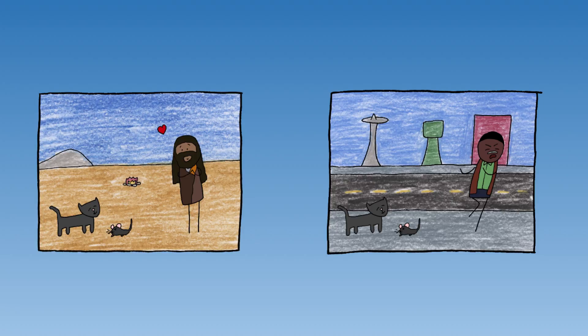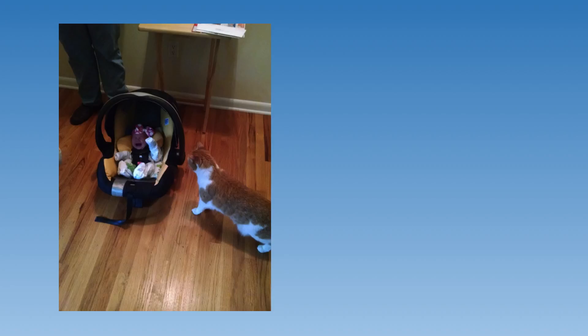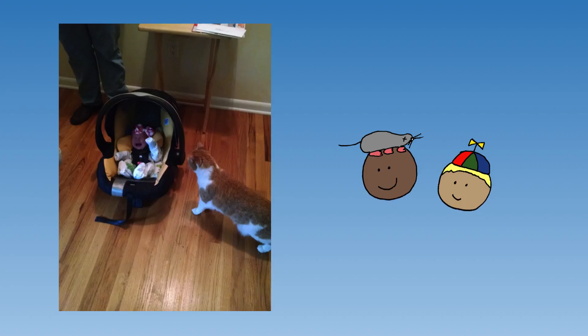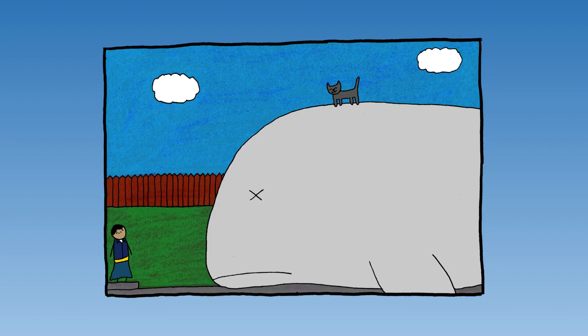I would like to wrap up by pointing out that this hypothesis explains the data perfectly. Infants and children are essentially worthless to a cat, and therefore they do not invest in earning their approval — therefore, there has never been selective pressure towards evolving disgust at this age. We are disgusted by dead animals because that is what cats hunt and kill and present, and we are disgusted by small dead animals because that is what cats can hunt and kill and present. But if your cat shows up at your doorstep with a dead whale, perhaps they have earned your approval. Thank you.